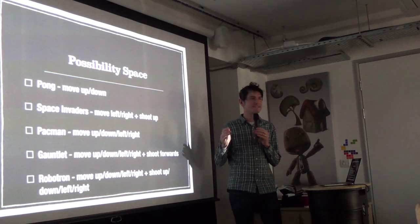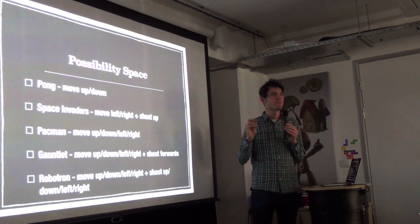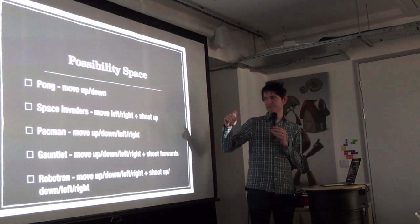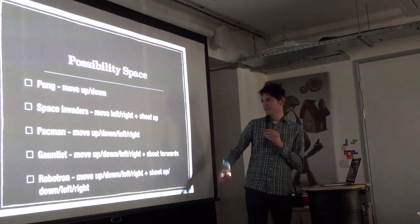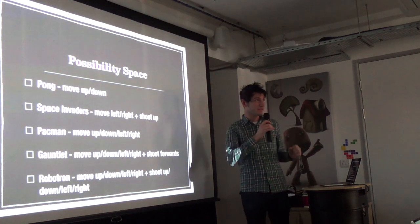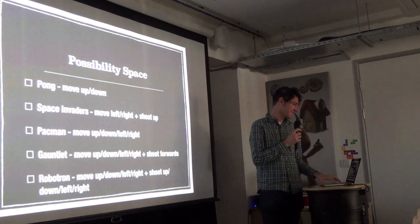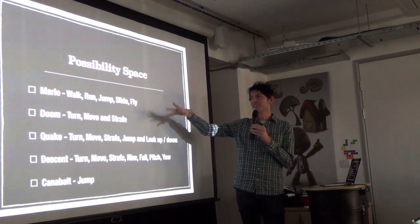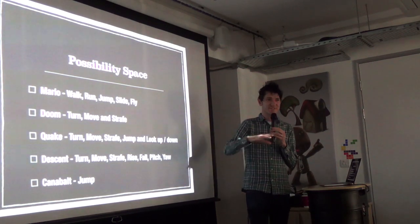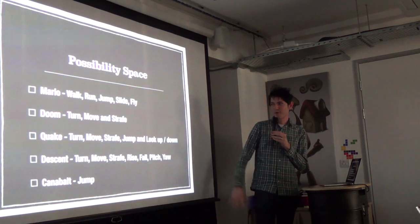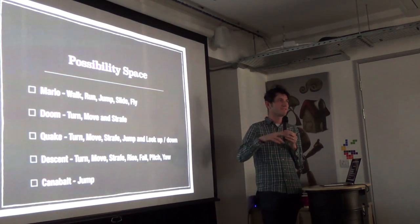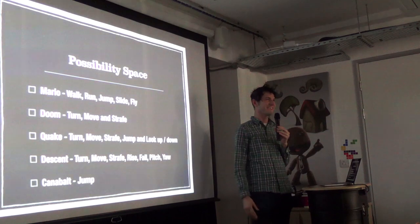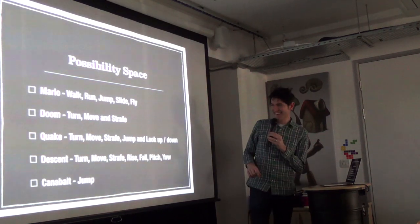Looking at the history of possibility space: in Pong you could only move up and down. In Space Invaders, left/right and shoot upward. In Pac-Man, all four directions. In Gauntlet, all of those plus shooting forwards. In Robotron, move in all directions and aim in others. In Mario, walking versus running, jumping, sliding, flying. In Doom, strafing and turning. In Quake, mouse look adds looking up and down. By Descent, you've got six degrees of freedom with pitch and yaw — and no one knows how to control it and they're feeling sick and upside down.